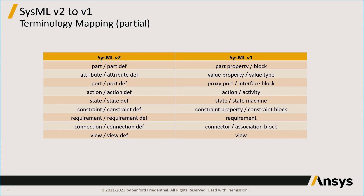Similarly, proxy port and interface block in v1 correspond to a definition and usage. In SysMLv2, it's simply called port and port def. Going down the v2 column, you see that very consistent terminology: action and action def, constraint and constraint def, requirement and requirement def. The terminology and pattern are completely consistent throughout.